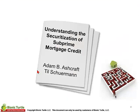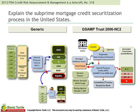So, understanding the securitization of subprime mortgage credit. On the left, I have my diagram for a generic securitization — that would be a cash securitization. On the right-hand side, the same sort of securitization but with the players inserted in this particular case, the Goldman Sachs AMP Trust, which is the name of the special purpose entity analyzed in the paper.